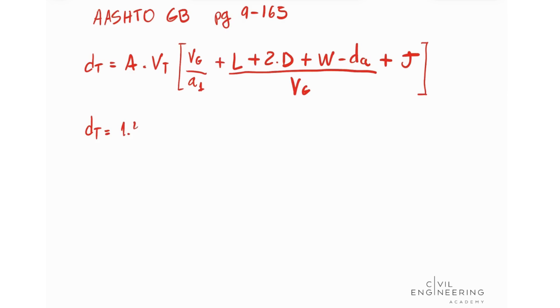So A is 1.47 times 75 miles per hour, this times 8.8 divided by 1.47 plus L which is 73.5